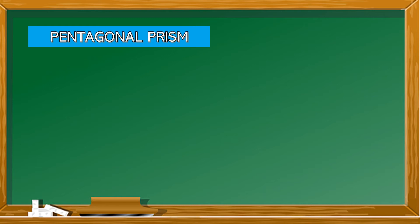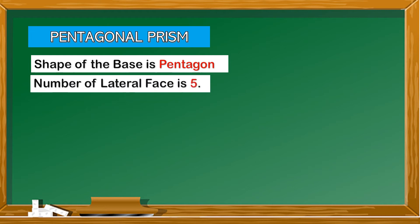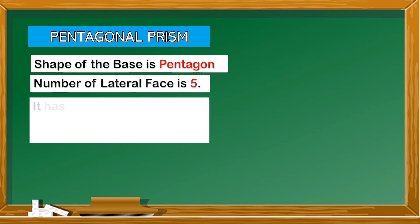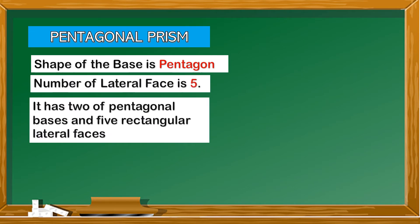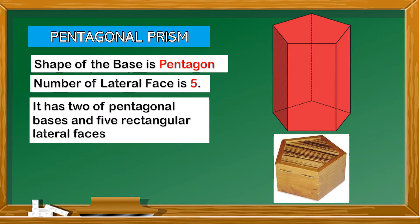Pentagonal prism. The shape of the base is a pentagon and the number of lateral faces is 5. It has two pentagonal bases and five rectangular lateral faces. Here is an example of a pentagonal prism.